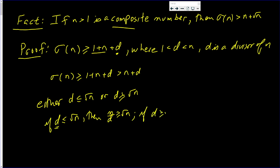If d is greater than the square root of n—well, I'll say it just for completeness—then n over d is less than the square root of n. Either way,